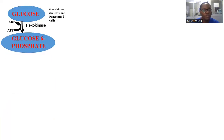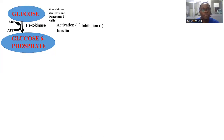The glucose needs to be trapped inside the cell. This reaction is carried out by hexokinase or glucokinase, converting glucose to glucose-6-phosphate, which traps the glucose inside the cell. This step is very important in glycolysis because it is one of the regulated steps. Activation is done by insulin, while inhibition results from the product glucose-6-phosphate, and glucagon can also inhibit at this step.